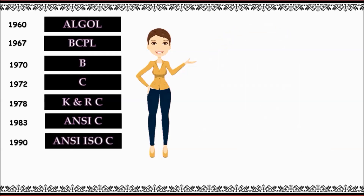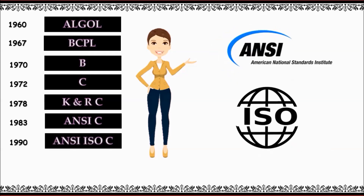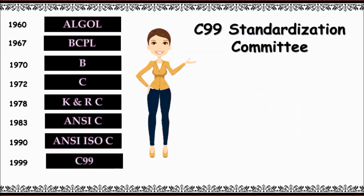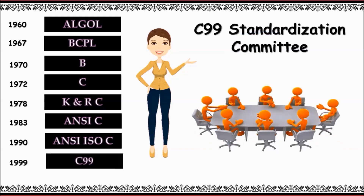In 1990, the International Standards Organization (ISO) approved C, and this version is referred to as C89, along with ANSI C. Finally, C99 introduced several new features, many of which had already been implemented as extensions in several compilers.